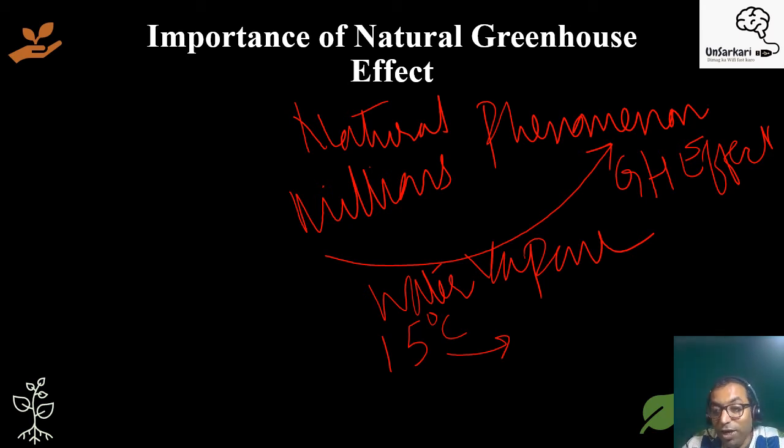Average global temperatures are maintained at about 15 degrees centigrade due to natural greenhouse effect. Without this phenomenon, life would not be able to exist or survive. In one way, it is creating a kind of balance.